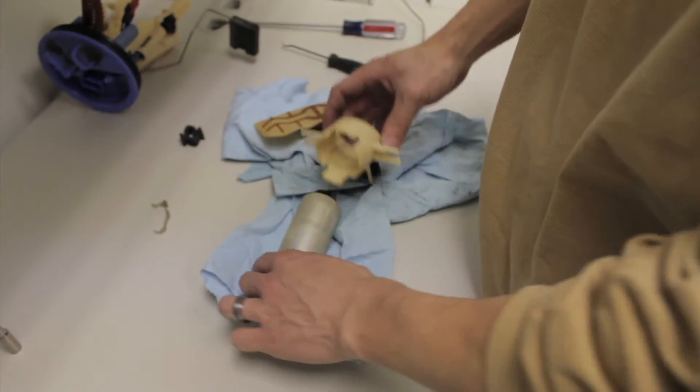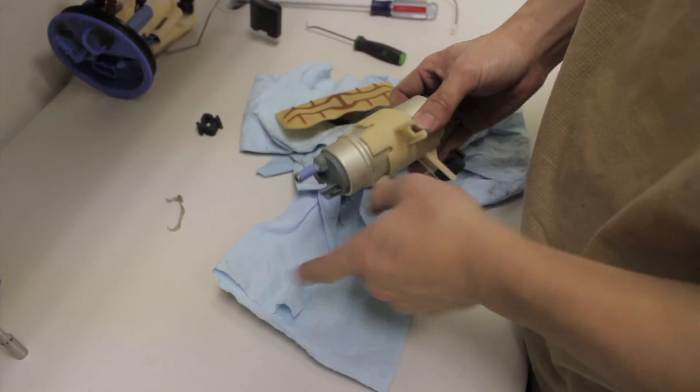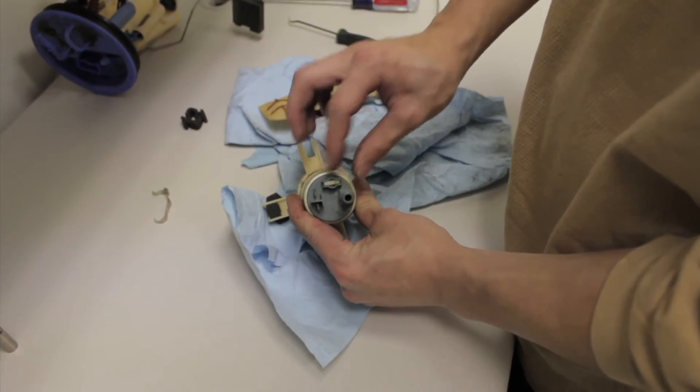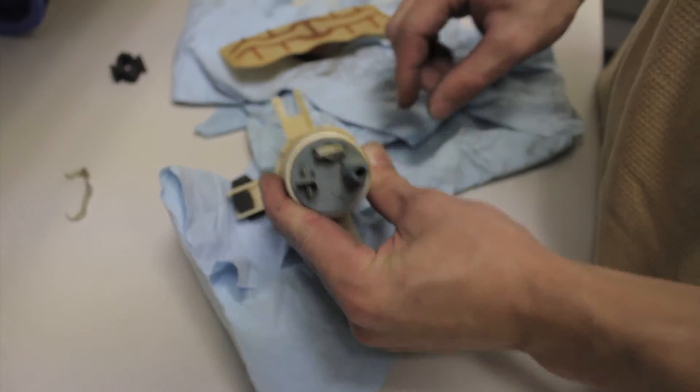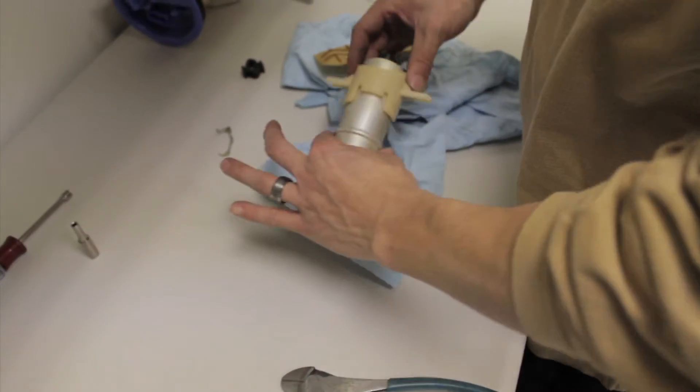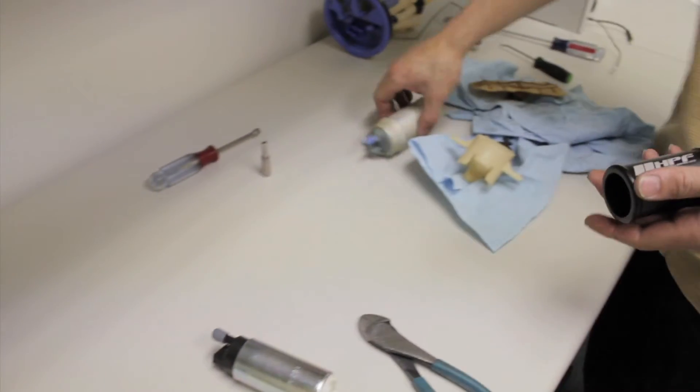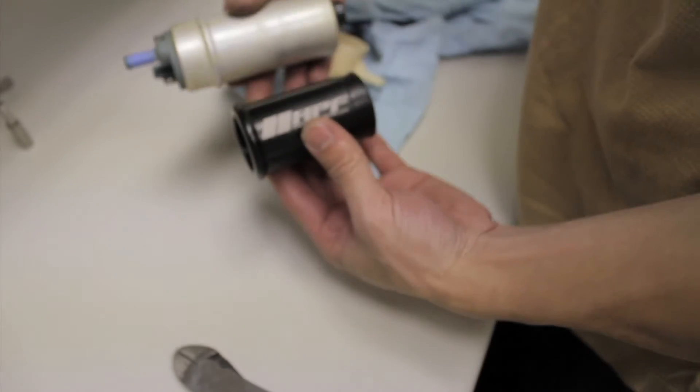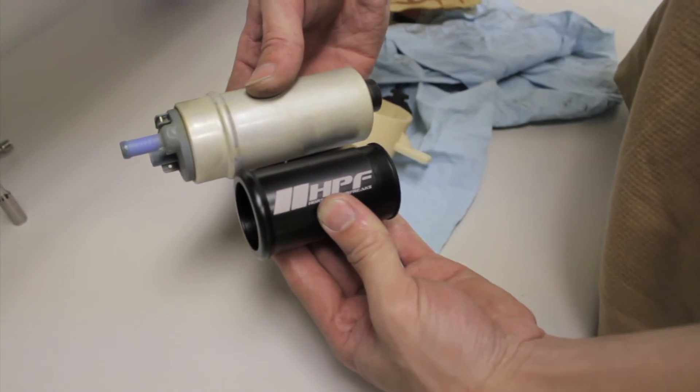Remember the orientation that the pump came out in. You see how the outlet is offset? You want to make sure the outlet stays on the same side. So, we'll go ahead and do that, pull the pump out. Okay, now I want to show you what our engineer has done here. As you can see, the sleeve mimics the pump exactly.